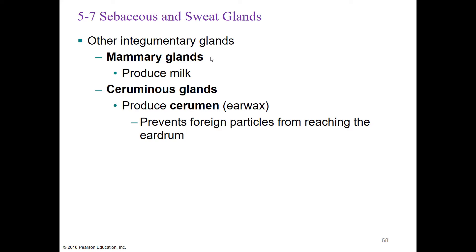Other integumentary glands include mammary glands, which produce milk, and ceruminous glands, which produce earwax. Earwax coats the ear canal to prevent foreign particles from reaching the eardrum—so earwax is a good thing.